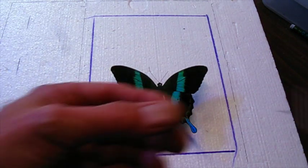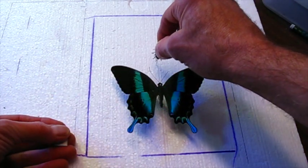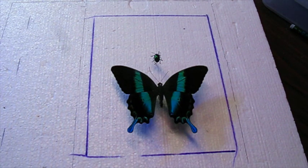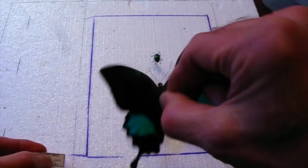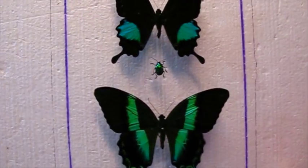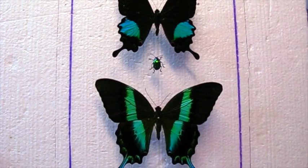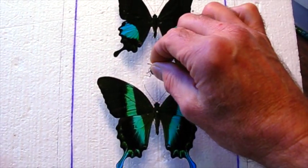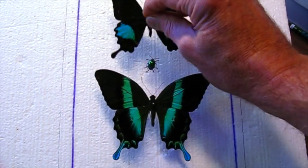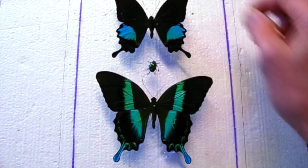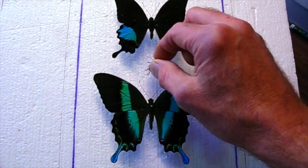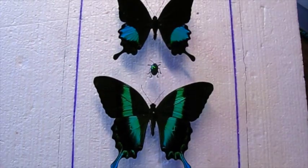And we're going to put a little green chrysomelid beetle in the middle. And then Papilio paris is going to go above. So that's the basic arrangement.